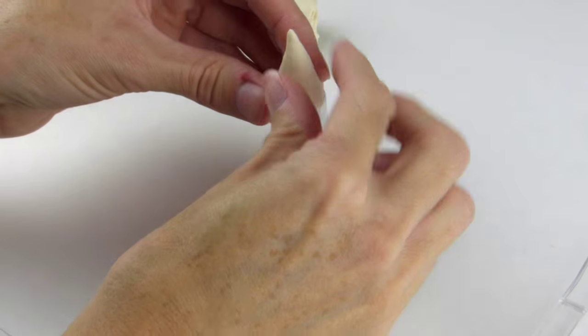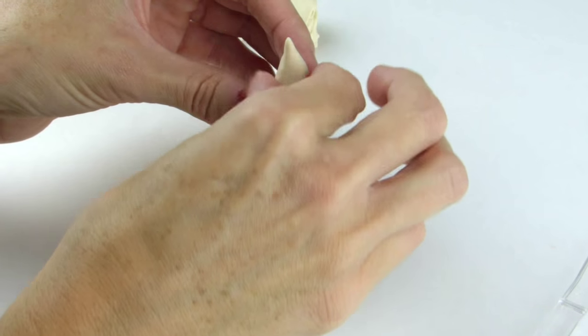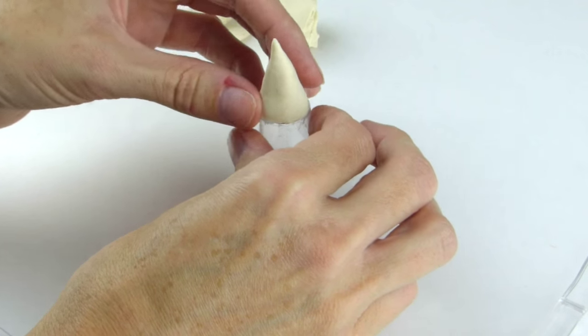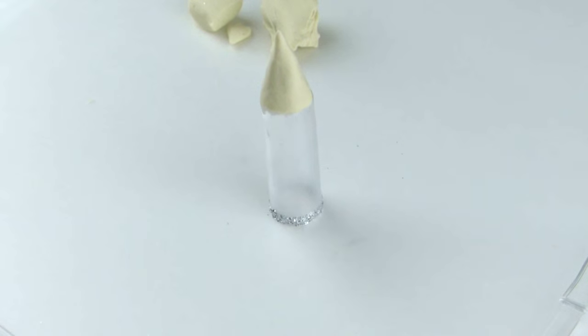Once you get the look that you would like, just remove it from the top of the container. If you're using baked clay, bake it. If you're using air dry, let it sit and dry.